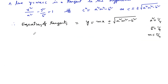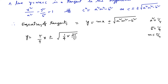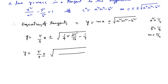So we write y = (5/4)x ± √((1/4)·(25/16) − (1/9)). Taking the LCM of 64 and 9, which is 576, the numerator becomes 25×9 = 225 minus 64, giving 225 − 64 = 161.